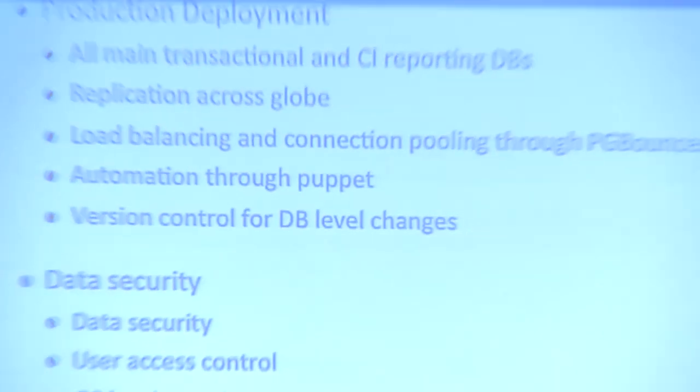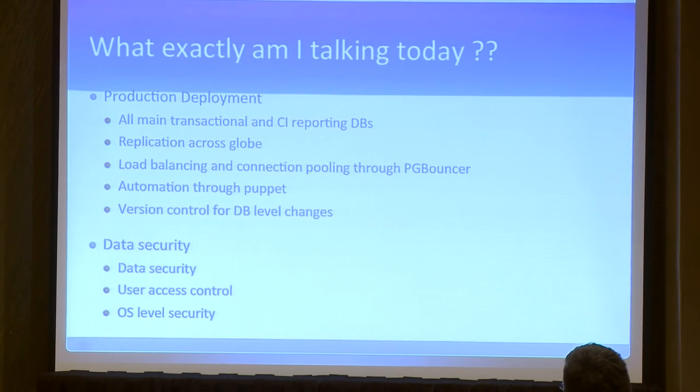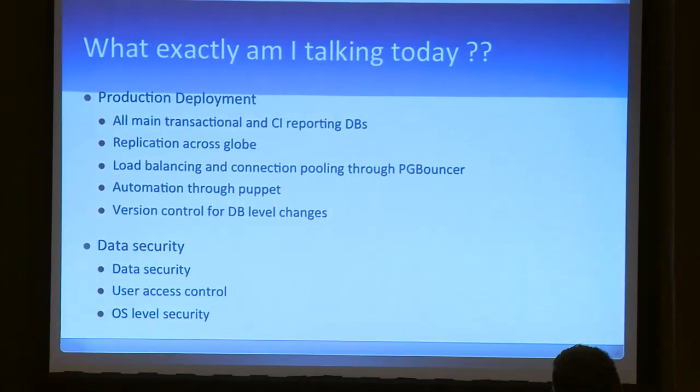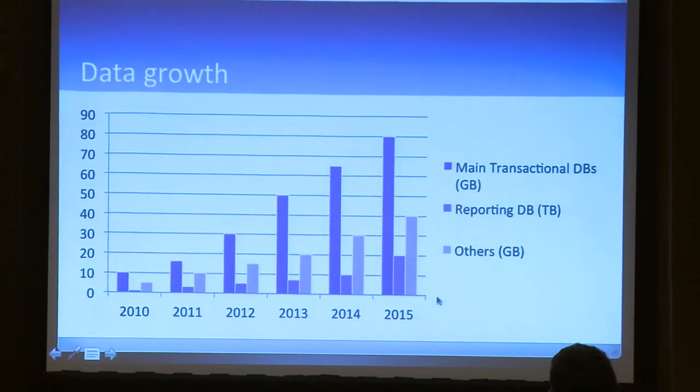Today I'm going to talk about the production environment related to our DB servers, which includes all the main transactional and CI reporting DBs. I'm including specific applications because about 80% of our database servers are on Postgres, so today I'll talk only about Postgres-related topics: replication across the globe, load balancing, connection pooling through PG Bouncer, automation through Puppet, version control for DB-level changes, and security — covering data security, user access control, and OS-level security.